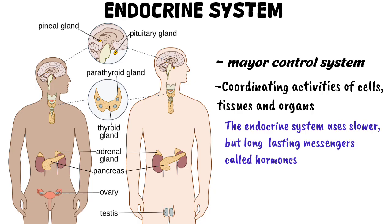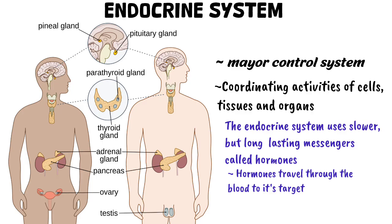The endocrine system is made up of glands, which are specialized organs that secrete hormones directly into the bloodstream rather than through ducts. These hormones regulate metabolism, growth and development, reproduction, and the body's response to stress and environmental changes. The endocrine glands differ from exocrine glands, such as the sweat and salivary glands, which secrete substances through ducts to external surfaces or cavities.